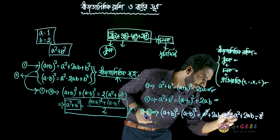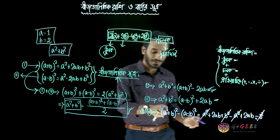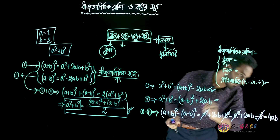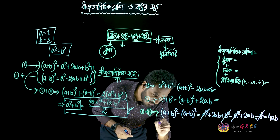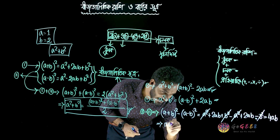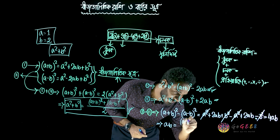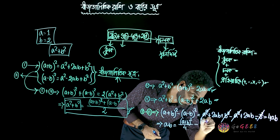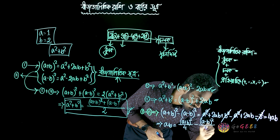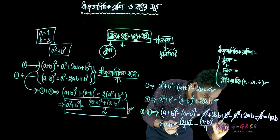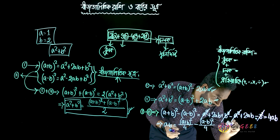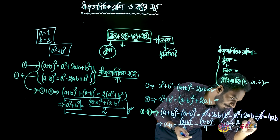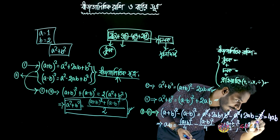So we have a squared, b squared: a plus b whole square minus a minus b whole square. This gives us ab equals a plus b by 2, whole square, minus a minus b by 2, whole square.